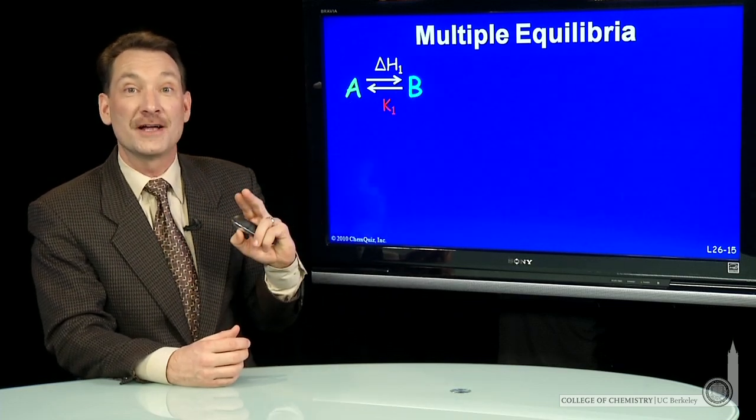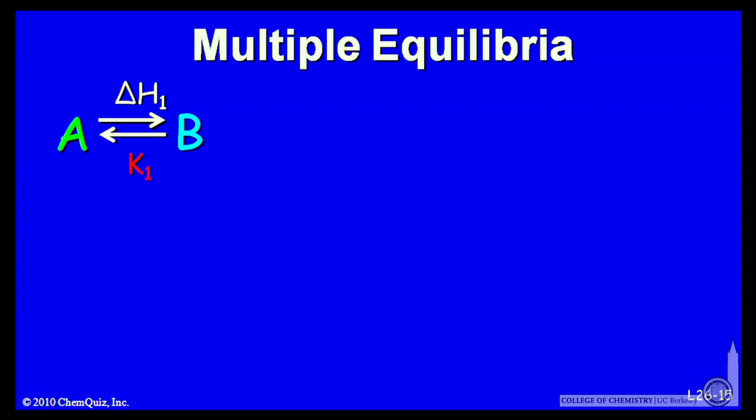A going to B with an equilibrium constant K and an enthalpy delta H1, and then B transforming to C with equilibrium constant K2 and enthalpy delta H2.